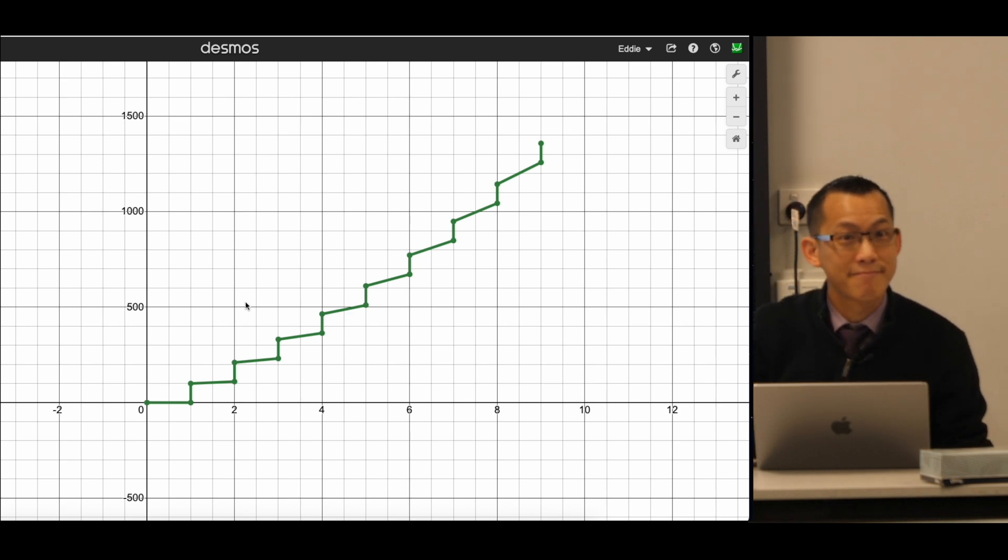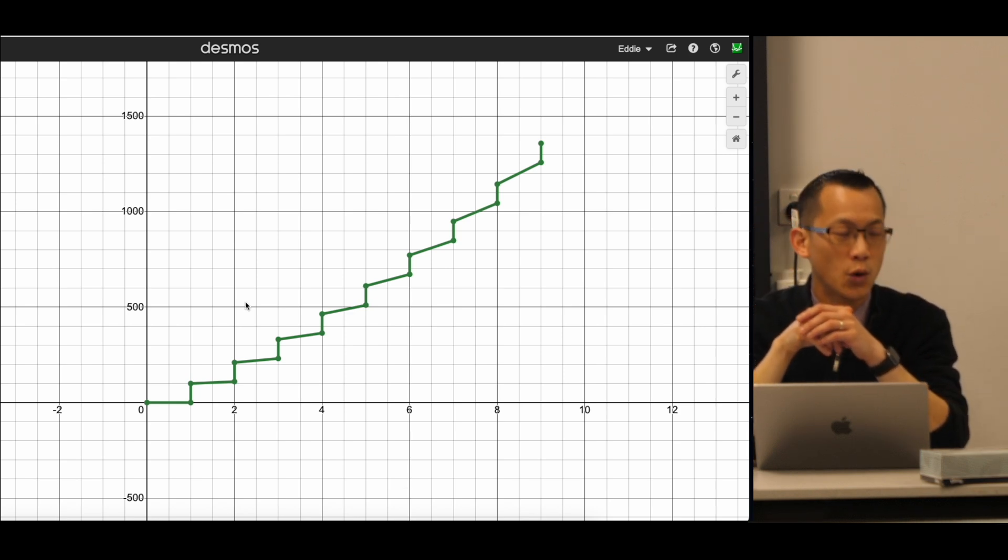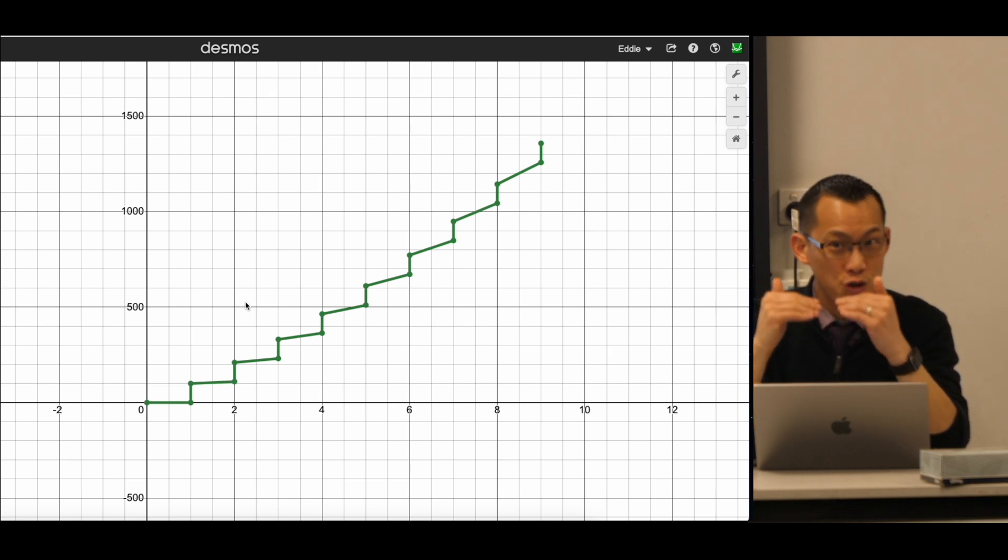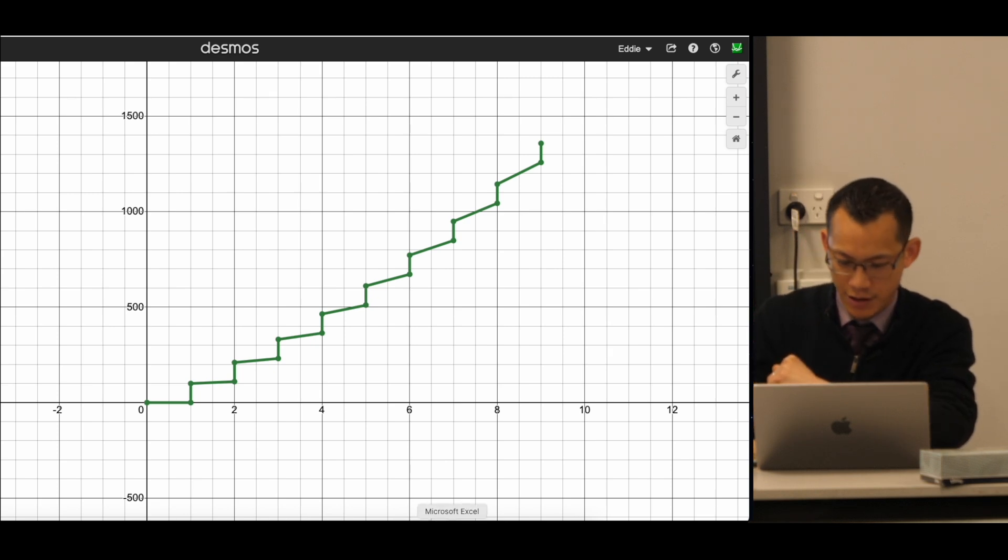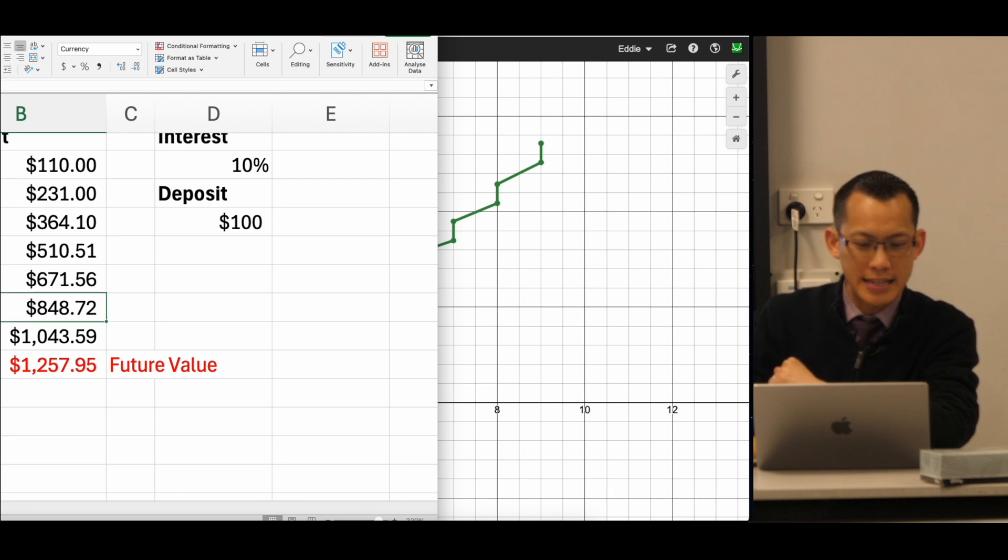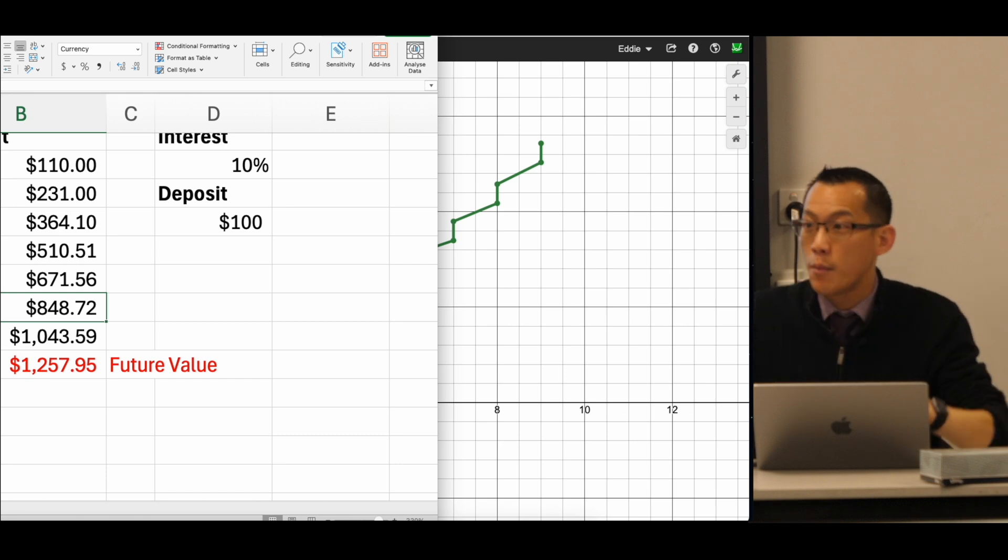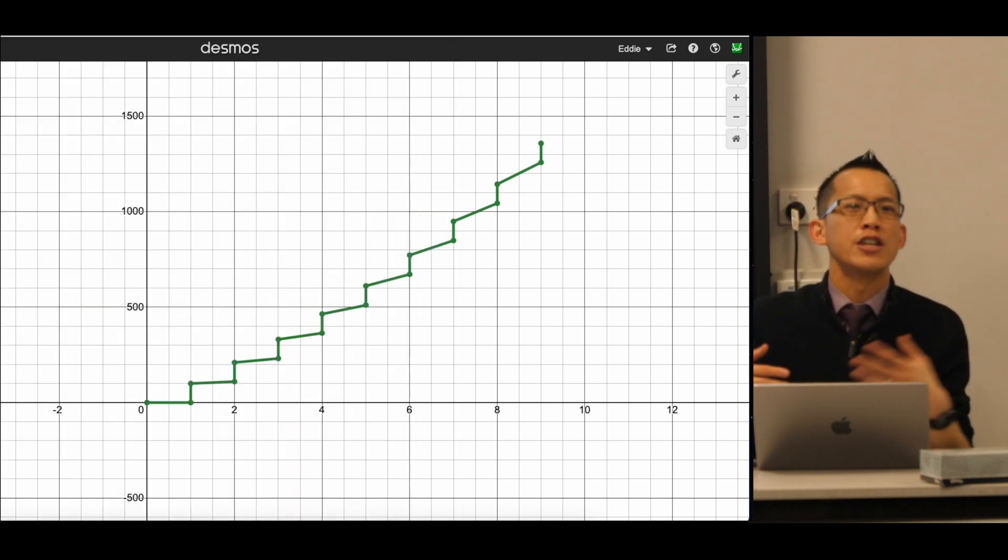Ben? Because there's enough money in the account where the amount of interest is greater than the deposit. Awesome. Yes. There's enough actual money in the account. We saw it in the spreadsheet right here. You know, by year number six, you got $800 in there. When you do 10% of that, that's $84. So that's almost as much as your deposit. And of course, eventually, it overtakes your deposit. So that's the idea.